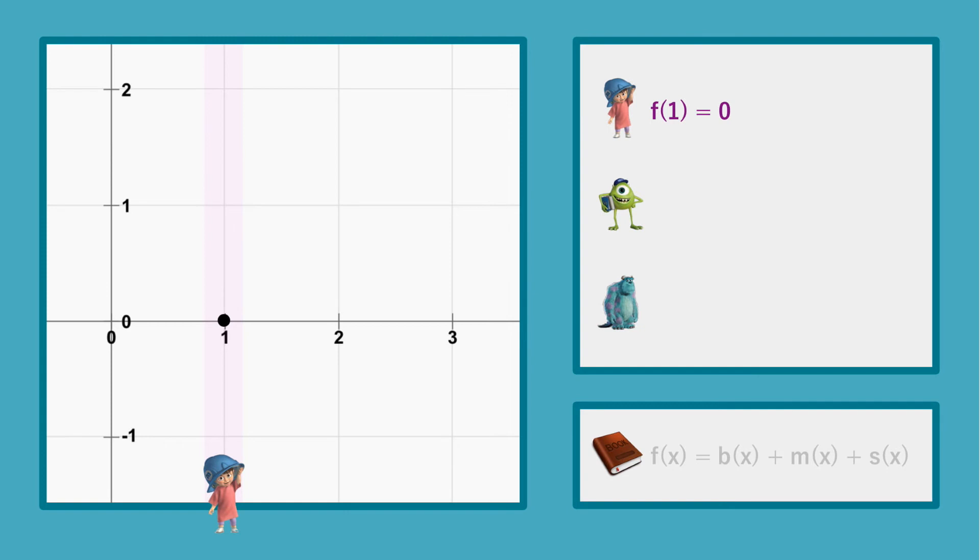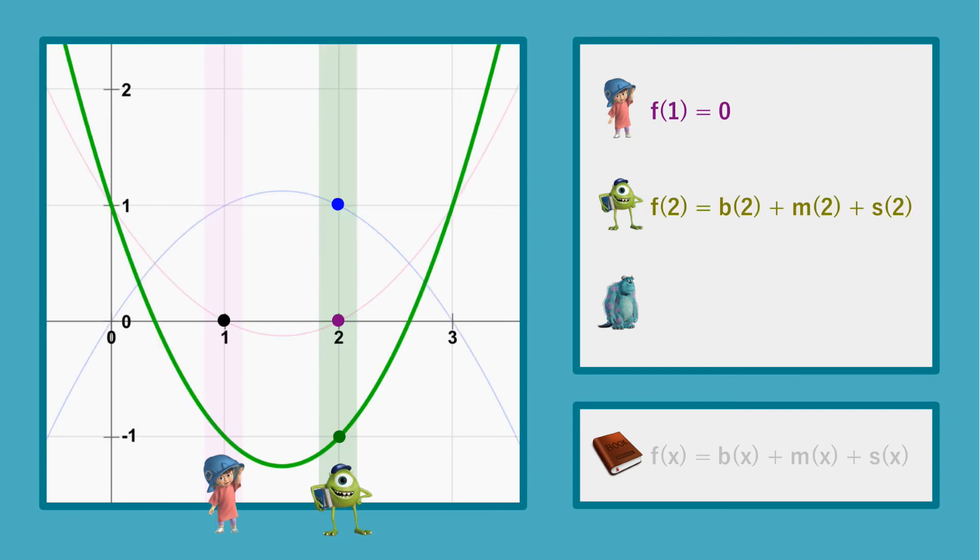That is, Mike and Sully learn that the value of f(1) is 0. Similarly, Mike adds up 0, minus 1, and 1, which also gives 0, and makes this value of f(2) publicly known.